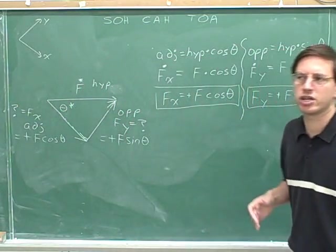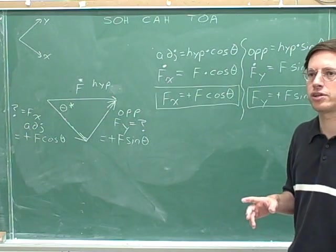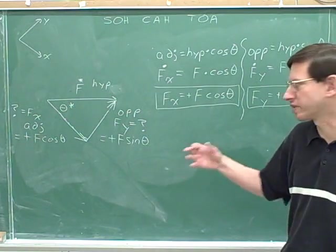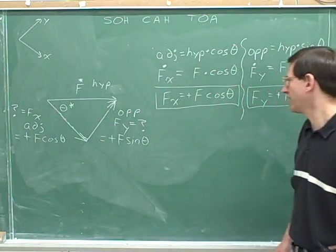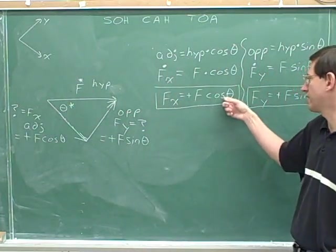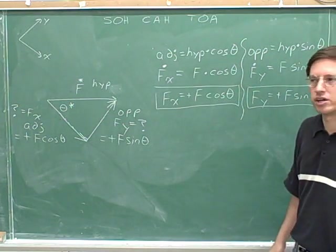Remember that the convention on a problem with no numbers is that your answers should just include the original variables that you were given. Well, the original variables we were given were f and theta. So our answers can only include f and theta. Well, this answer only includes f and theta, and this answer only includes f and theta. You can't include unknowns.